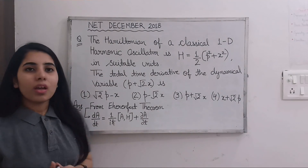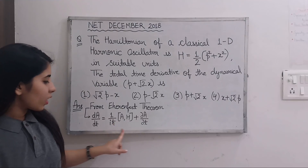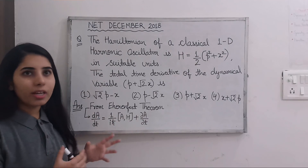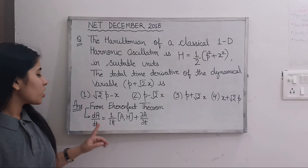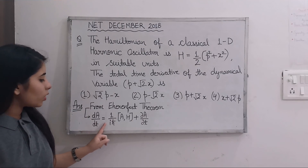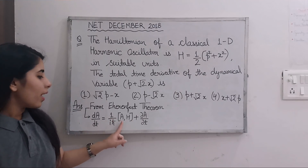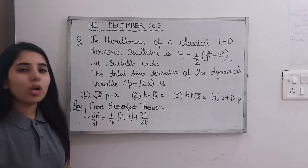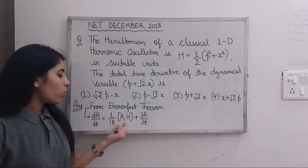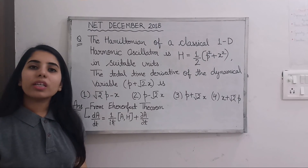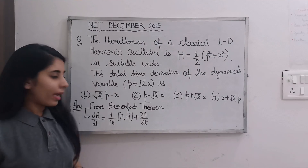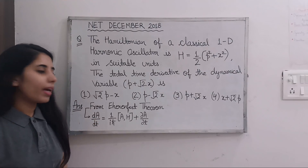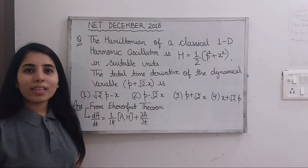Here we have the equation which is going to help you solve such kind of questions. The formula is: dA/dt = (1/iℏ)[A, H] + ∂A/∂t. Here A is the variable for which we need to find the total time derivative.